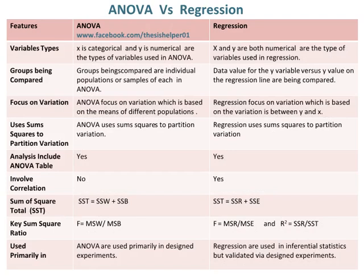In ANOVA, X is categorical and Y is numerical in terms of variable types. Whereas, in regression, both X and Y are numerical. In ANOVA, the groups being compared are individual populations or samples. Whereas, in regression, data values for the Y variable are compared versus the Y value on the regression line. ANOVA focuses on variation based on the means of different populations, whereas regression focuses on variation between Y and X.